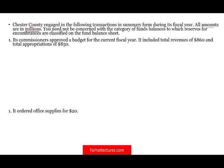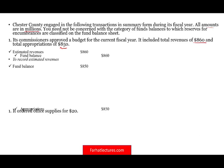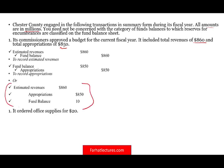The commission approved a budget for the current fiscal year. It included total revenue of $860 million and total appropriations of $850 million. They estimate revenues of $860 million and plan to spend $850 million — a $10 million surplus if everything goes as expected. For the budgetary entry, we debit estimated revenues and credit appropriations and fund balance. We can combine the two entries: debit estimated revenues $860M, credit appropriations $850M, credit budgetary fund balance $10M.